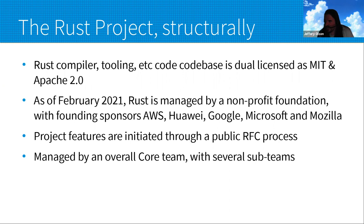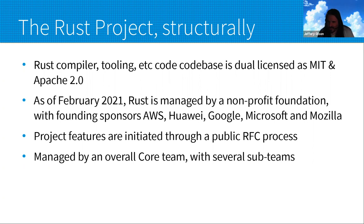Rust also periodically releases editions representing breaking changes compared to previous editions. When Rust 1.0 was released, the Rust 2015 edition launched. All prior editions remain supported in the compiler, and individual crates opt into which edition they support. The latest edition is Rust 2021, debuted alongside Rust 1.56 in late October. Rust is an open source project developed on GitHub. They've built amazing infrastructure, and a new batch of sponsors just joined including Arm and Toyota.